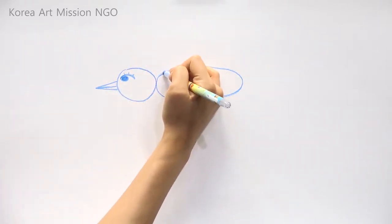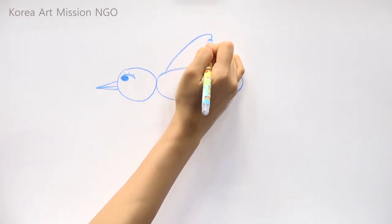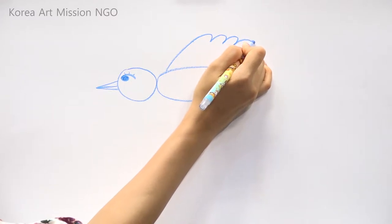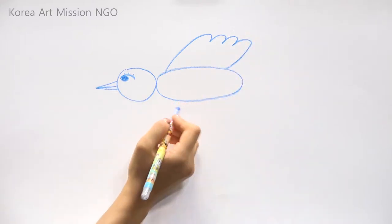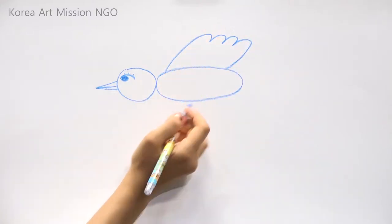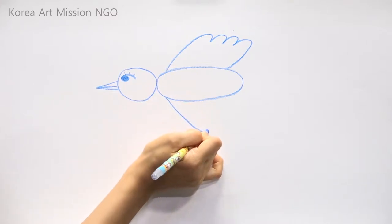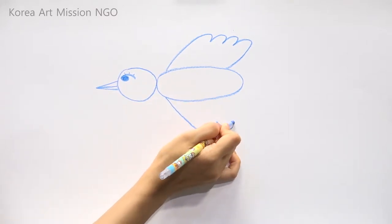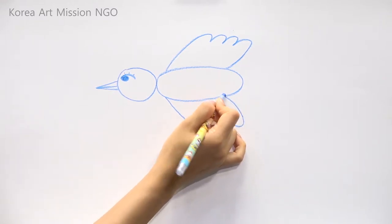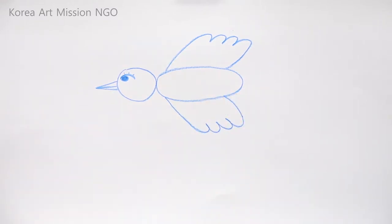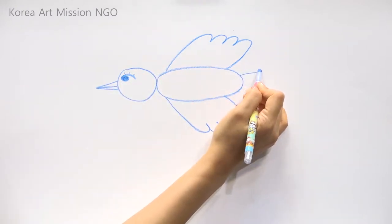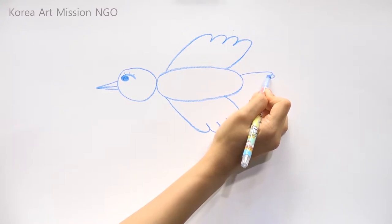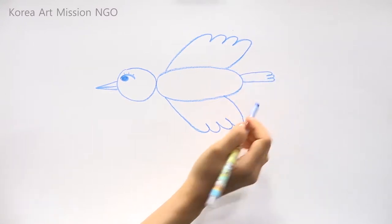And then I'll draw the wings. Draw the wings with a curve. Draw this side of the wing convexly, and the same on the other wing. Draw this wing convexly and the same on the other wing. And then I'll draw a tail. If you draw small convex lines on the side, the tail is complete.